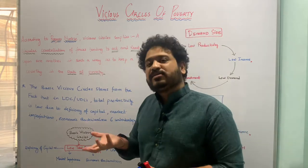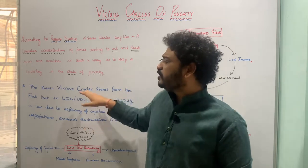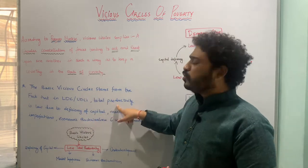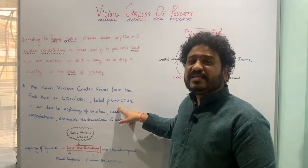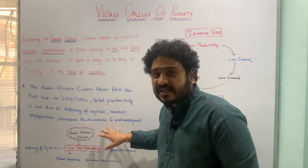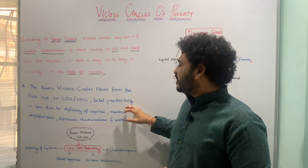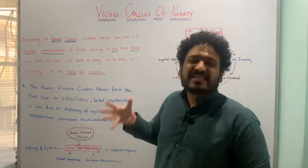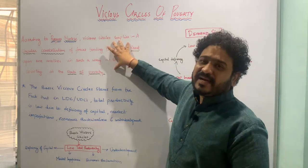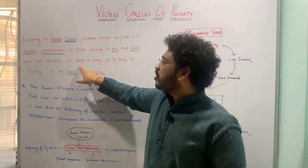Let us now look at how the basic vicious circles stem out and where they come from. The basic vicious circle stems from the fact that in least developed or underdeveloped countries, total productivity is low. This low total productivity is due to capital deficiency, market imperfections, economic backwardness, and underdevelopment — and as a result, it leads to a basic vicious circle in an economy.